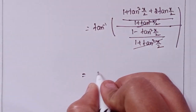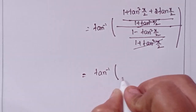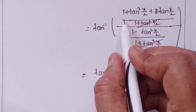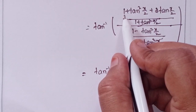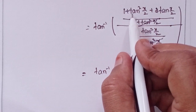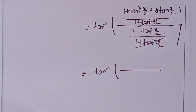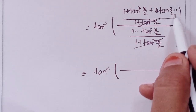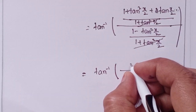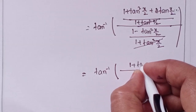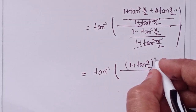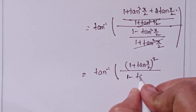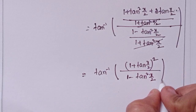Next, we get tan inverse of 2 tan(x/2) divided by 1 minus tan²(x/2).